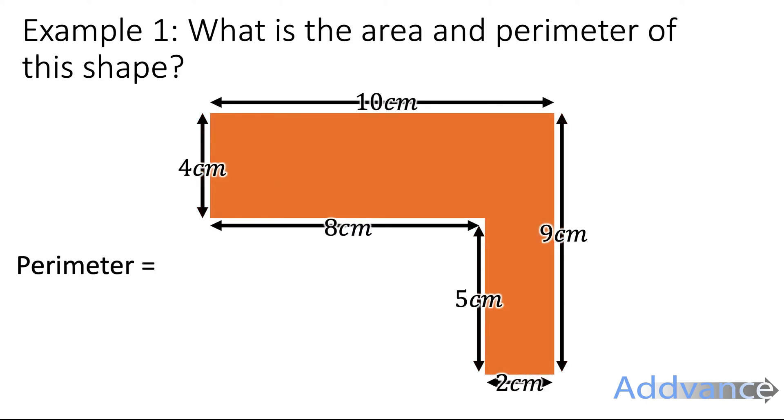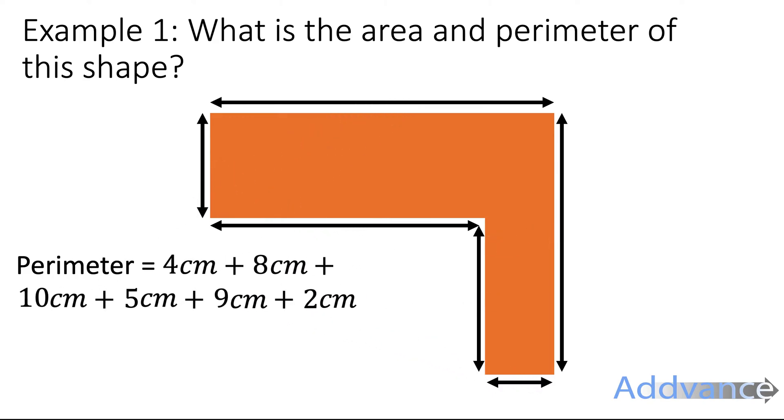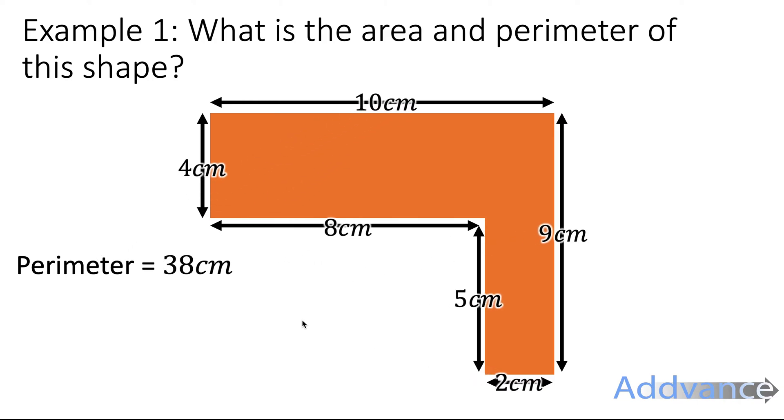Now we know what the missing sides are, and to find the perimeter we're going to add up all the sides like this. 4 plus 8 plus 10 plus 5 plus 9 plus 2 is 38 centimeters.